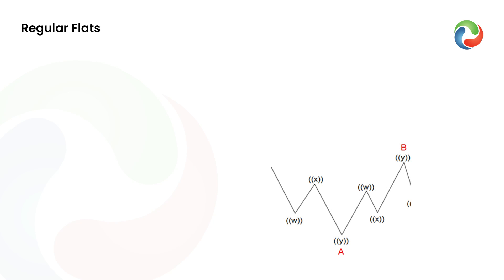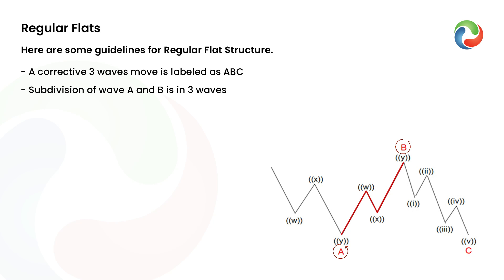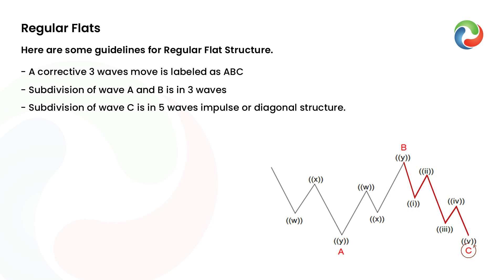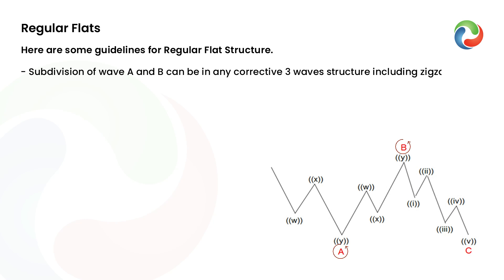Regular Flats. Here are some guidelines for regular flat structure. A corrective three-wave move is labeled as ABC. Subdivision of wave A and B is in three waves. Subdivision of wave C is in five waves impulse or diagonal structure. Subdivision of wave A and B can be in any corrective three-wave structure, including zigzag, flat, double three, or triple three.